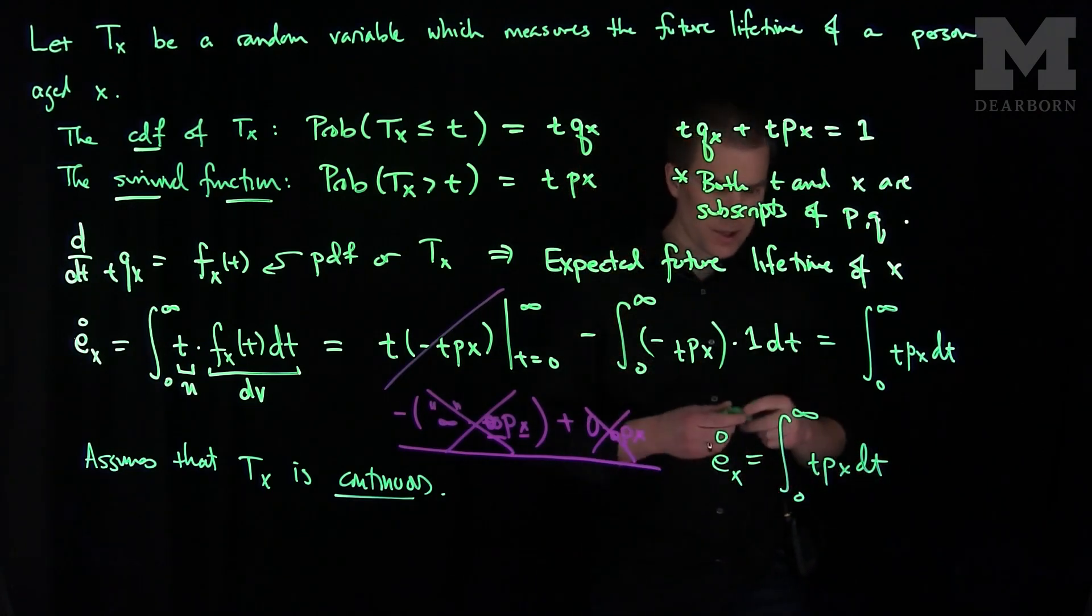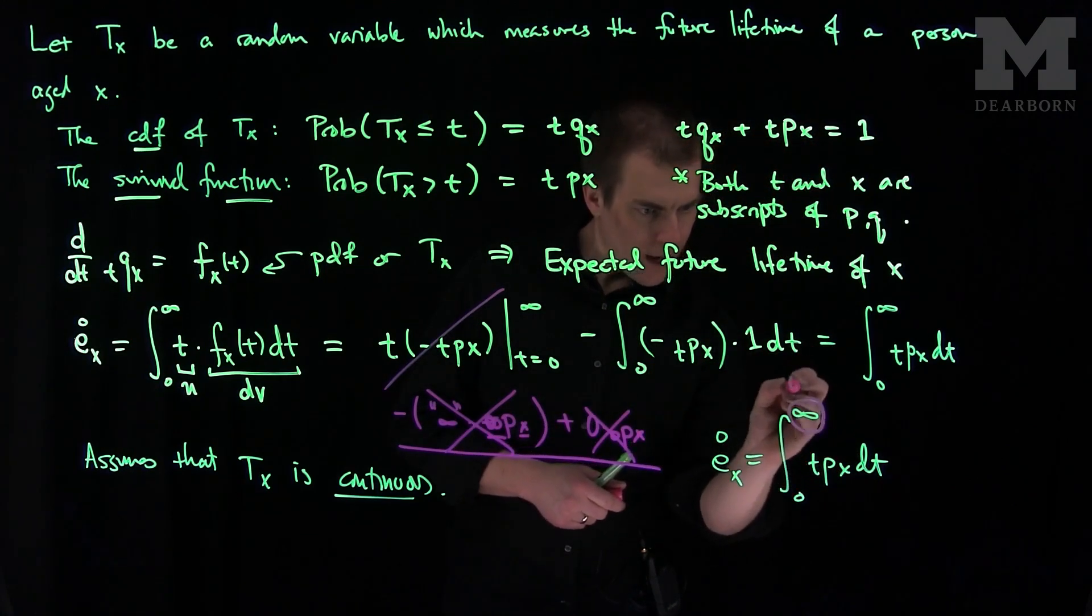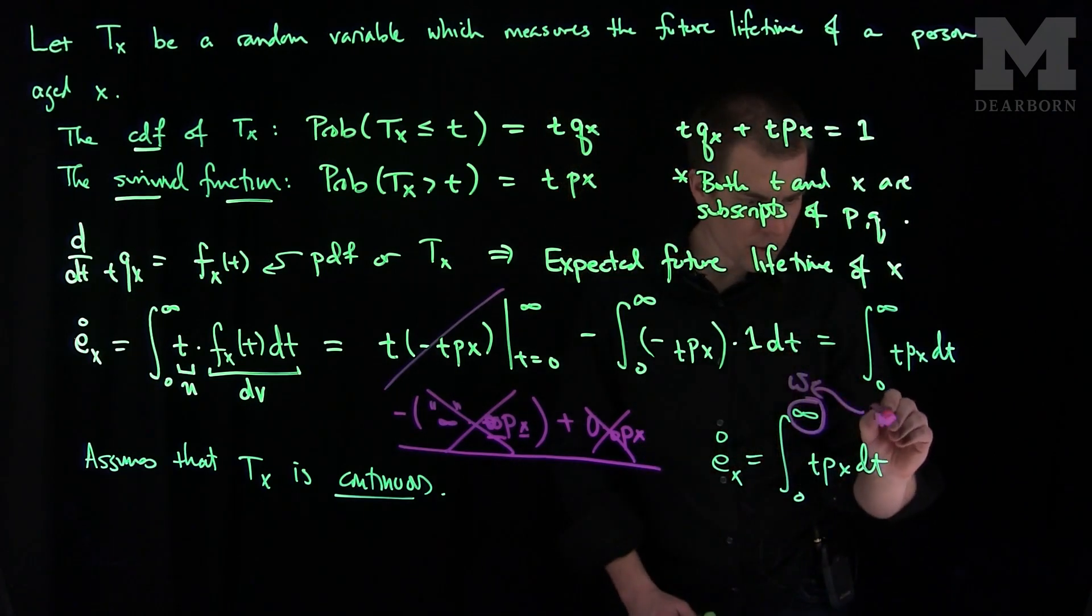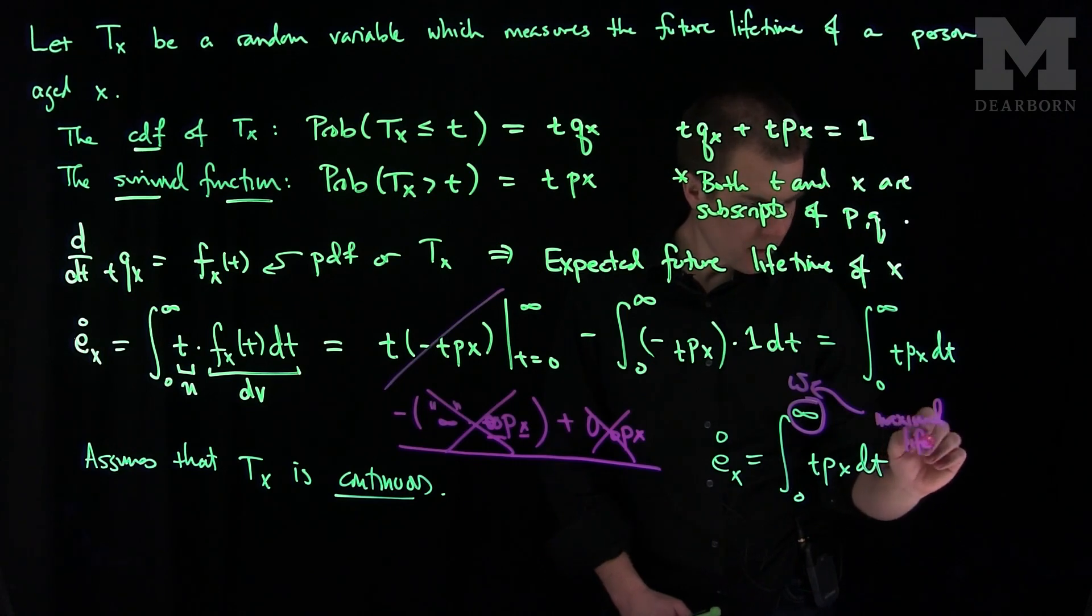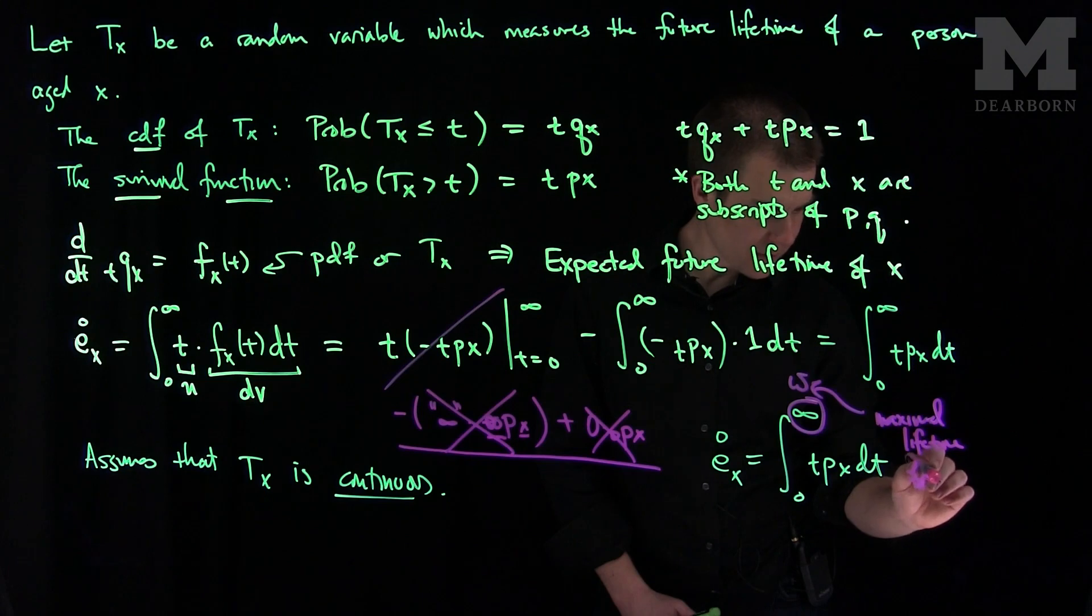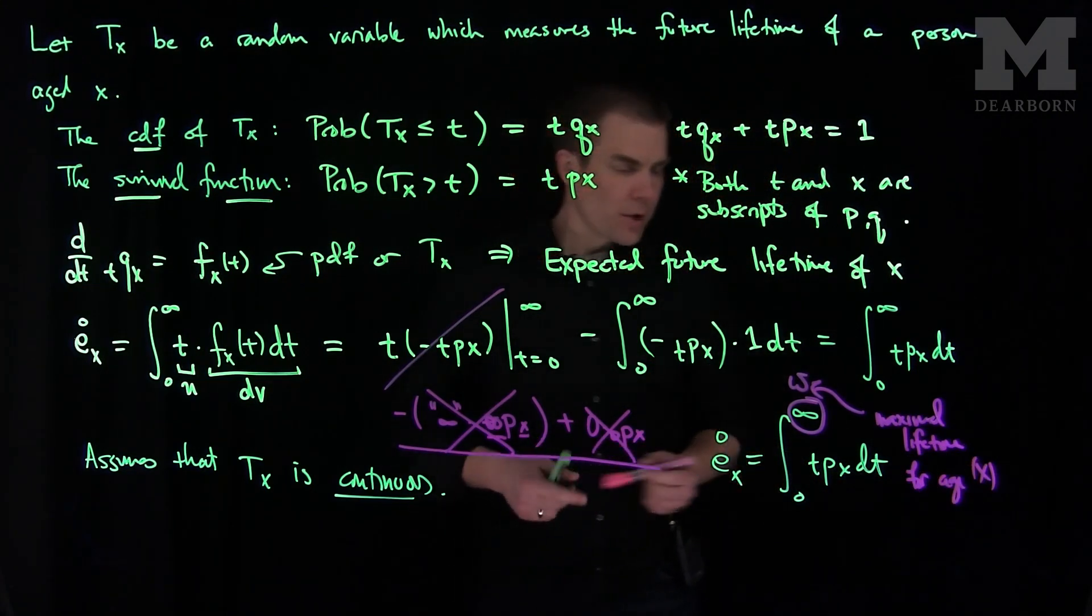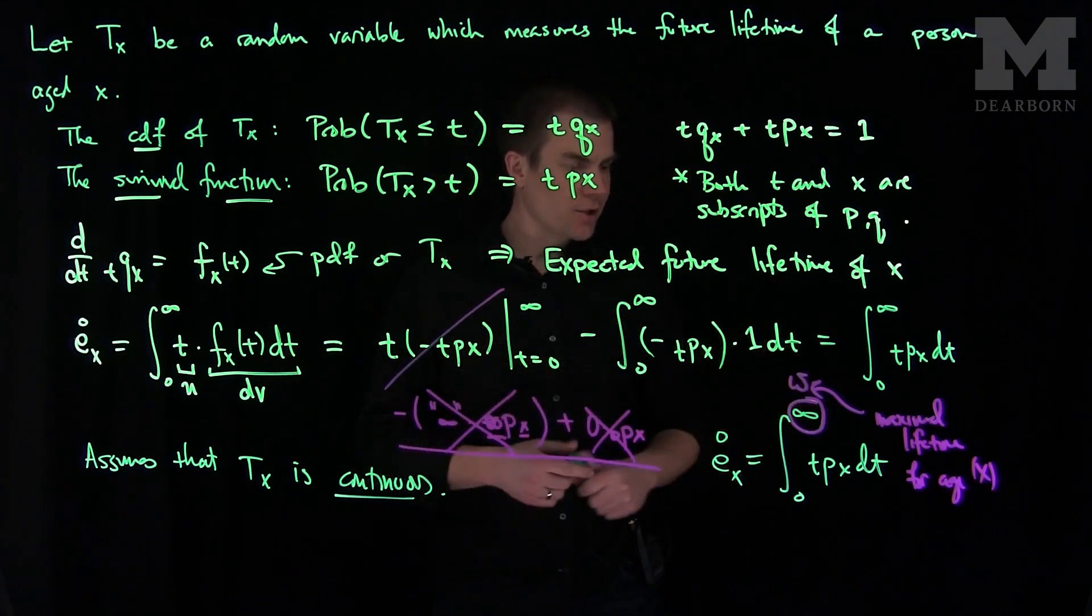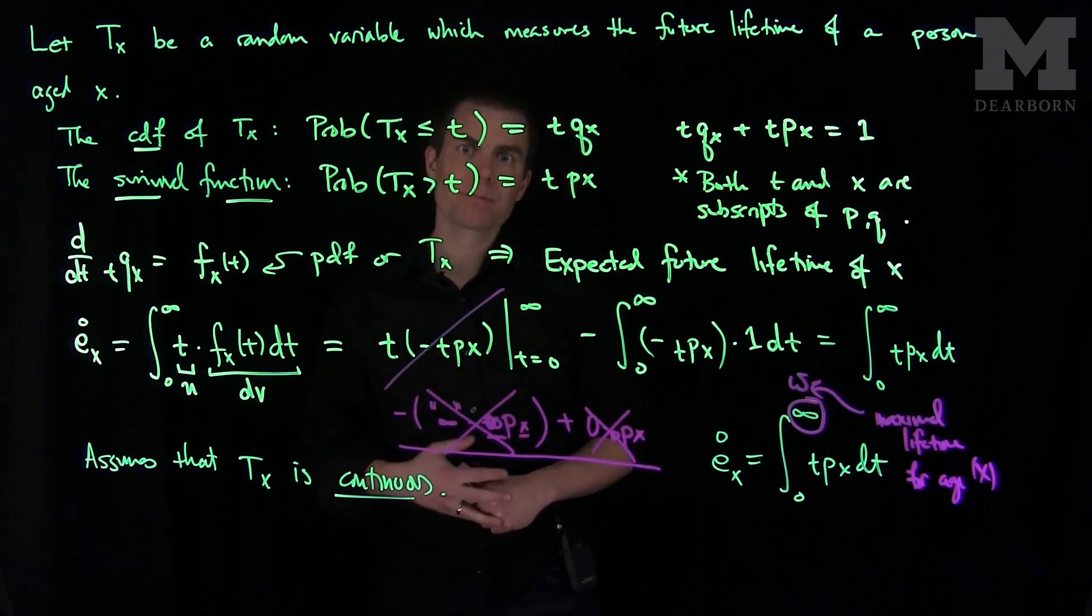Oftentimes, this infinity can be replaced by omega, where this is the maximal lifetime for a person age x. In other words, you can figure out, according to all the statistics you have, the maximum lifetime of someone currently aged x, and you can use that as your upper limit of integration when doing these problems. Thank you very much.